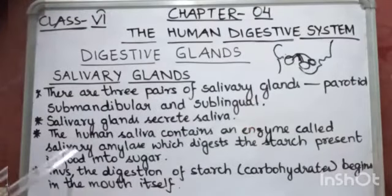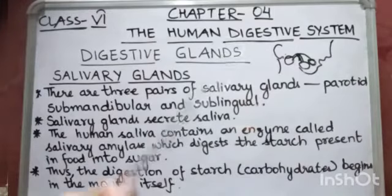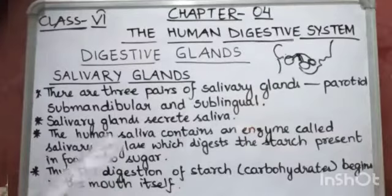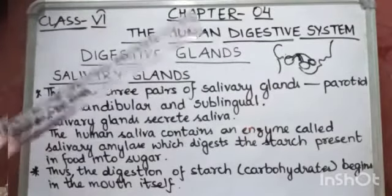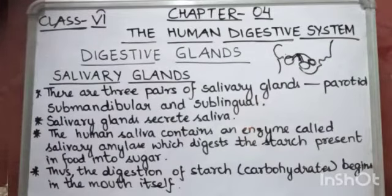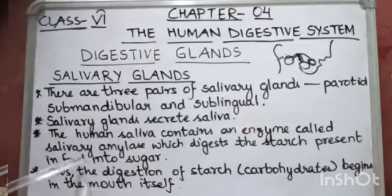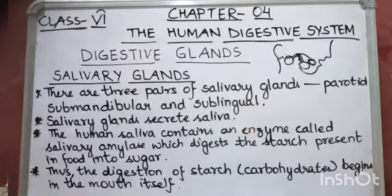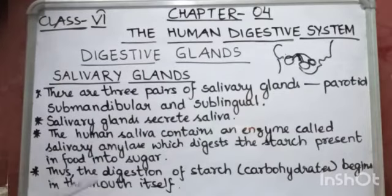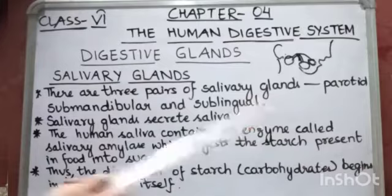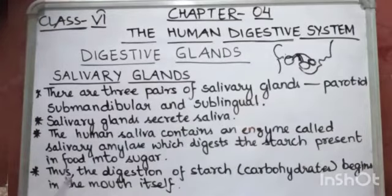Salivary glands secrete saliva, and human saliva contains an enzyme called salivary amylase. This enzyme turns starch present in food into sugar — that's why chapati and bread, which are sources of carbohydrates, taste sweet after chewing. This is because of salivary amylase. The digestion of starch actually begins in the mouth itself.